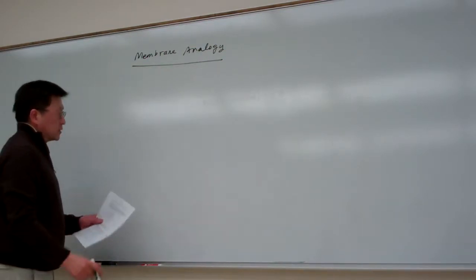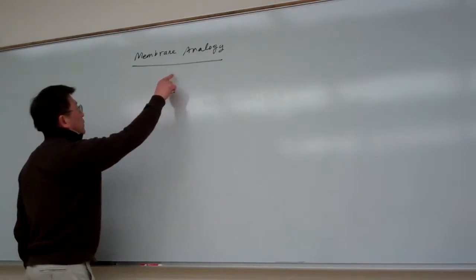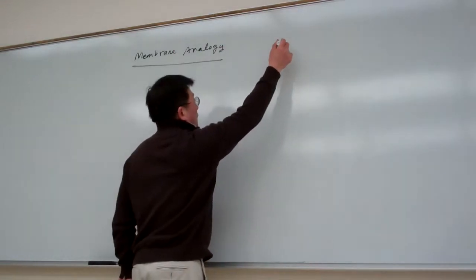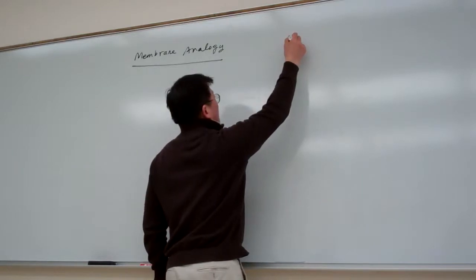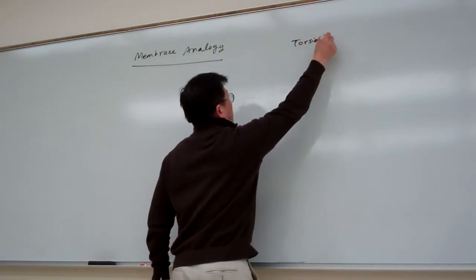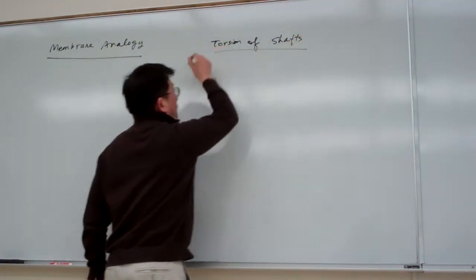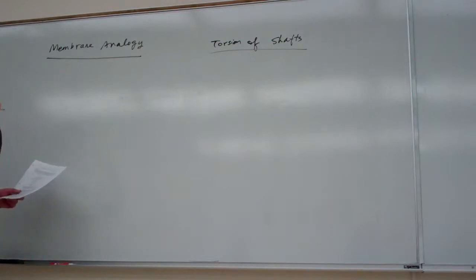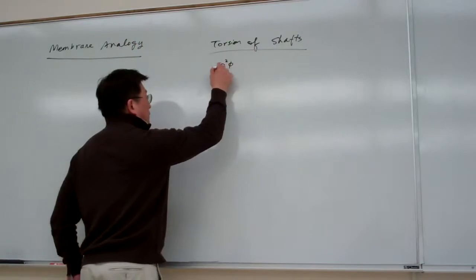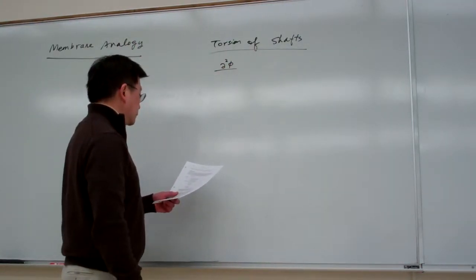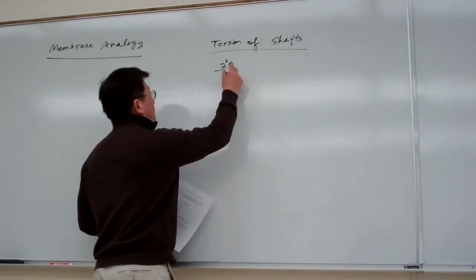And the way we can try is this - let me write it up here on the handouts. So in terms of the membrane and in terms of hours, the torsion of shafts. So here, phi is the Prandtl stress function.